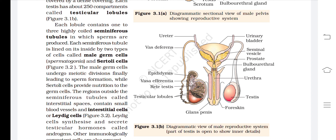Each seminiferous tubule is lined on its inside by two types of cells: male germ cells (spermatogonia) and Sertoli cells. The male germ cells undergo meiotic divisions finally leading to sperm formation, while Sertoli cells provide nutrition to the germ cells. The regions outside the seminiferous tubules, called interstitial spaces, contain small blood vessels and interstitial cells or Leydig cells, which synthesize and secrete testicular hormones called androgens.